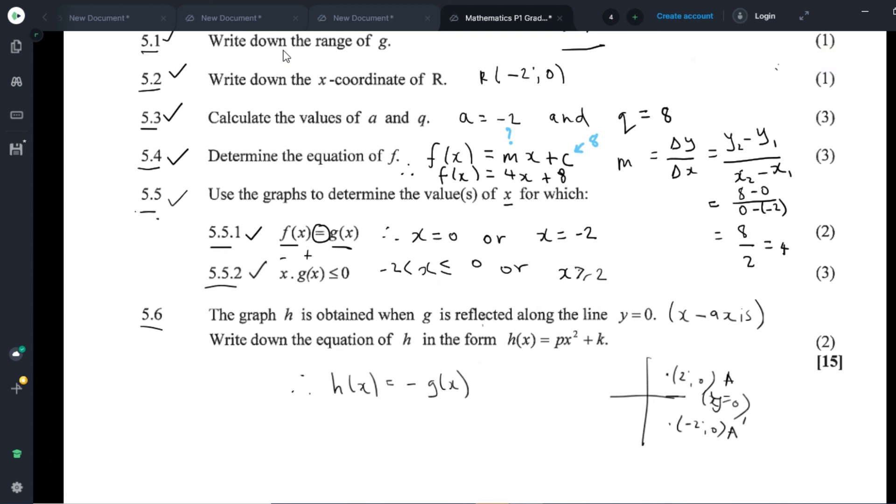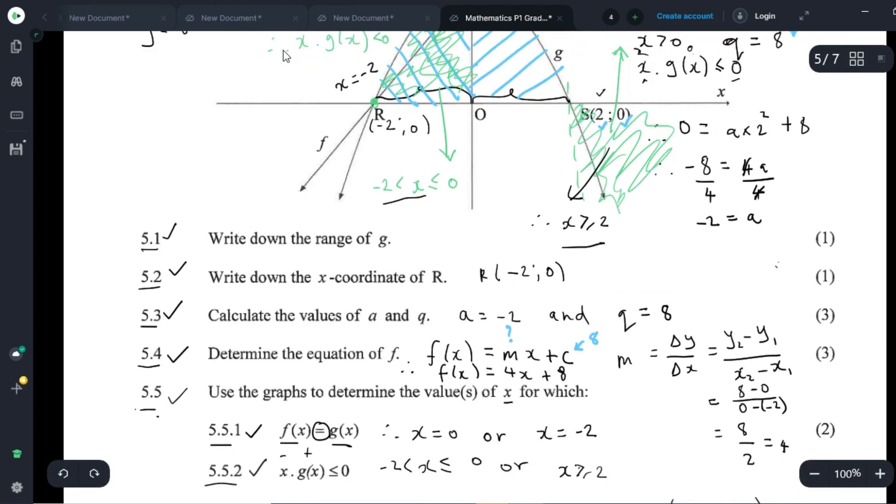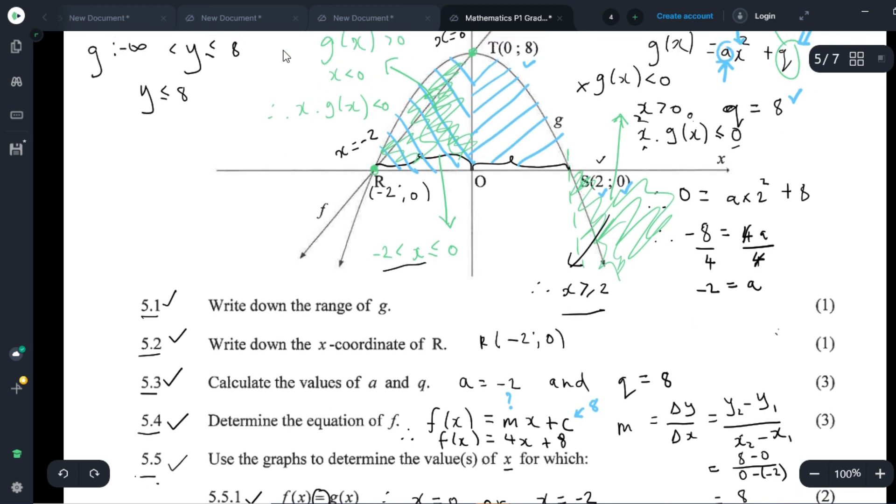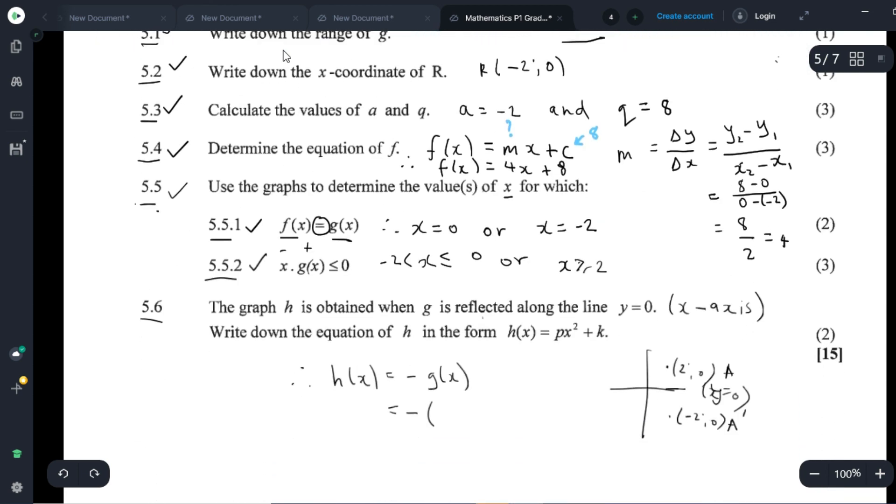And G of X in this case would be negative 2x squared plus 8. So negative times negative 2x squared minus 8. Negative and negative is positive. 2x squared minus 8. So that's very straightforward.